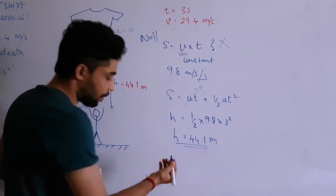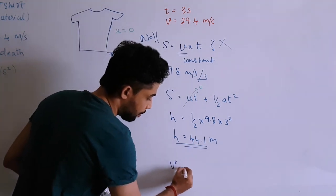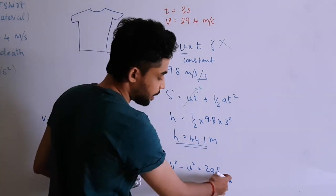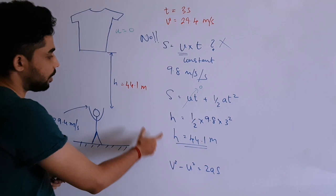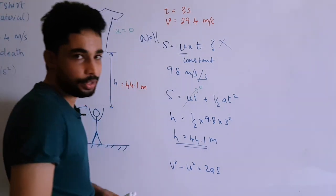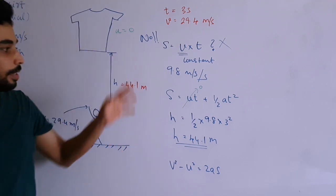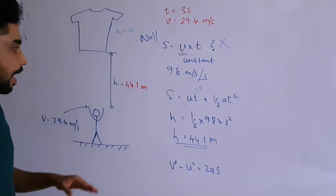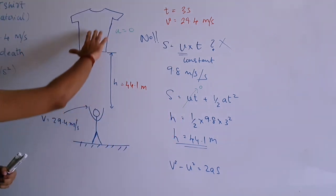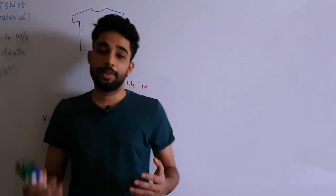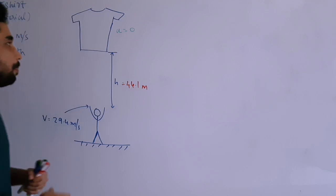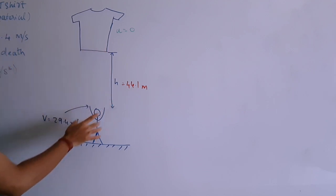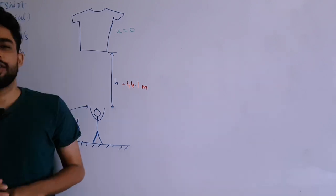You could also use v² − u² = 2as directly: final velocity 29.4, initial velocity 0, a = 9.8, solve for s and get 44.1 meters. I chose the longer method to explain the concept of gravity clearly. So the t-shirt must be dropped from a height of 44.1 meters. Now the key question: is this possible in real life?